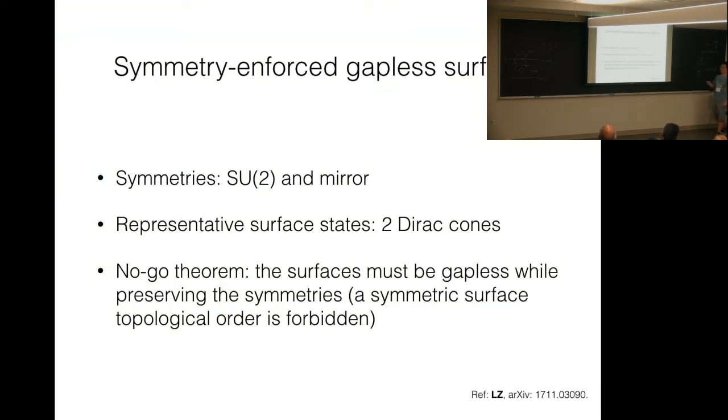My final example. In the same paper, you can also find two examples of topological crystalline insulators whose surfaces have this symmetry-enforced gaplessness. The symmetries of the system involve SU(2) and mirror symmetries. And the representative surface states have two Dirac cones on the surface. You can show there's a no-go theorem. The surface states must be gapless if the symmetries are to be preserved. In particular, a symmetric gapped surface topological order is forbidden. This is unlike the usual 3D symmetry-protected topological phases, where a gapped surface topological order is allowed. So this is analogous to the four copies of the helium-3B phase, which has time-reversal symmetry?